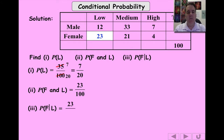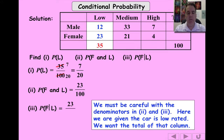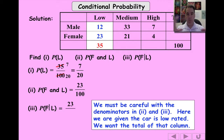Now things have changed. Instead of considering all 100 people, we're only dealing with the 35 people who own a low-rated car. That's the tricky bit — we've said we definitely have someone who owns a low-rated car, so our sample size has gone down from 100 to just those 35. Of those, 23 are female. So the probability is 23 out of 35.